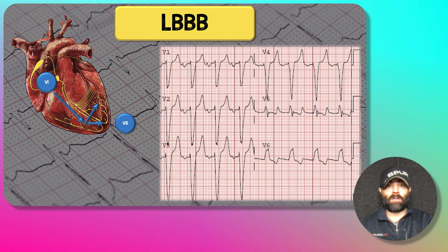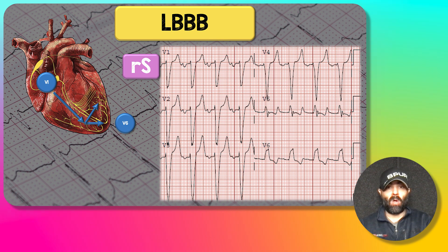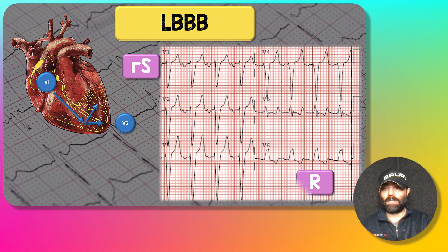Here are the actual precordial leads from someone with a left bundle branch block. You can see a small R-wave with a big S-wave in V1 — depolarization moving away — and a big R-wave in V6 as depolarization moves toward it. Stepping away, running towards.